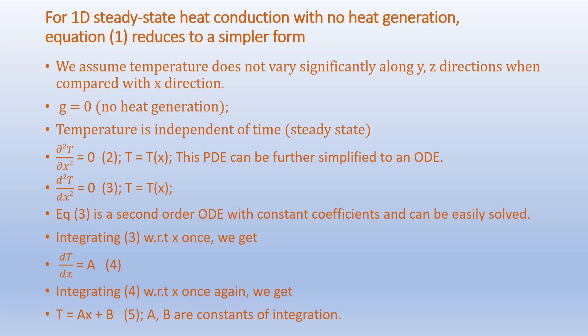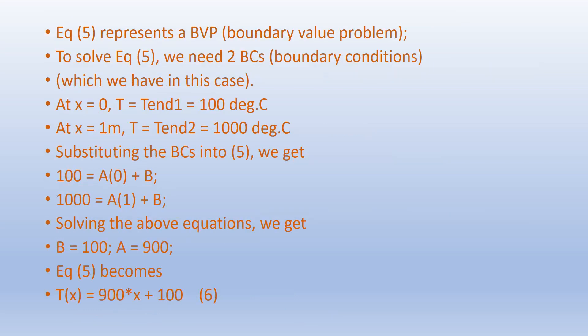Here A and B are constants of integration. This represents a boundary value problem. To solve it we need two boundary conditions: at x = 0, T equals T₁ which is 100 degrees Celsius; at x = 1 meter, T equals T₂ which is 1000 degrees Celsius. Substituting these boundary conditions, we solve for A and B. The equation becomes T(x) = 900x + 100. This is the exact solution of our differential equation.